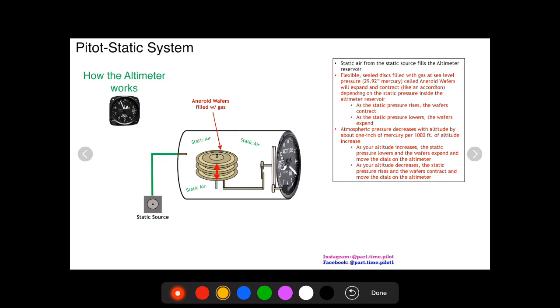So as static air is above sea level pressure, then the air outside is higher and we know that higher pressure wants to go to lower pressure. So the higher pressure on the outside of the wafer will want to exert a force inward on the flexible wafer, making it contract.